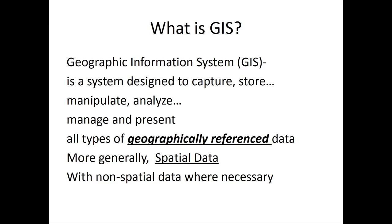What is GIS? Geographic Information System, or GIS. It is a system designed to capture, store, manipulate, analyze, manage and present all types of geo-referenced or geographically-referenced data. More generally, spatial data, and you mix it with non-spatial data where necessary. That is GIS.